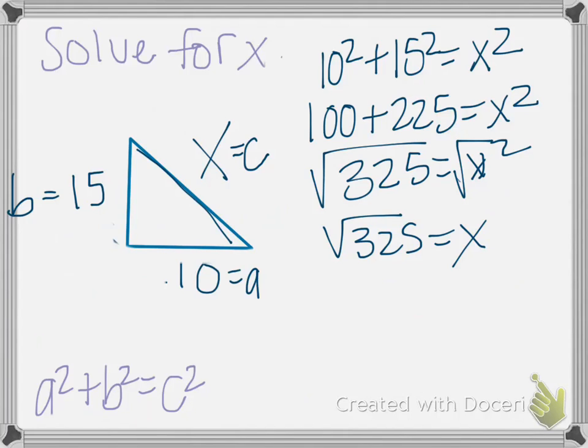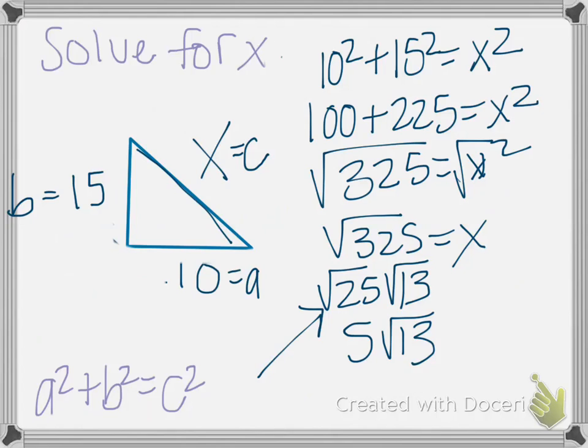But 325 can be divided, made more simple. We can see that we can divide it by 25, so we'll have the square root of 25 times the square root of 13, which leaves us with 5 square roots of 13. You just have to find that perfect square that goes into your number.